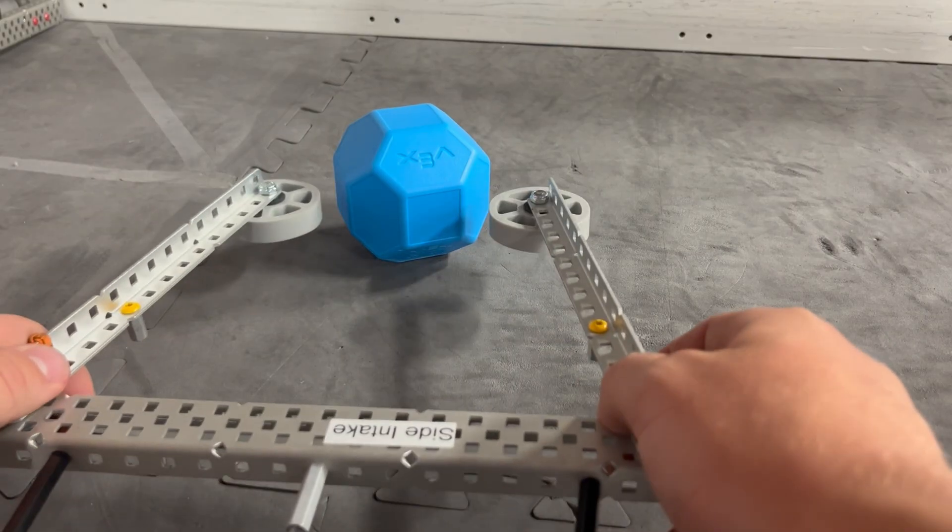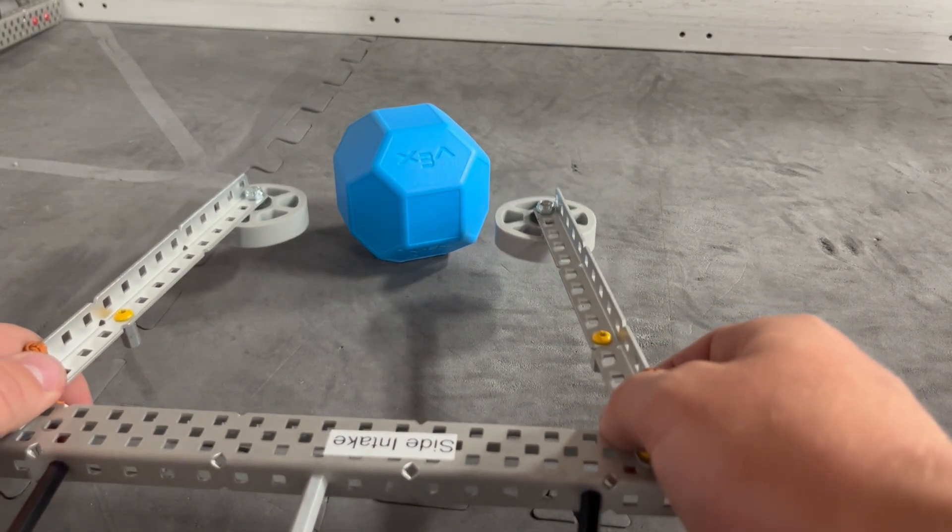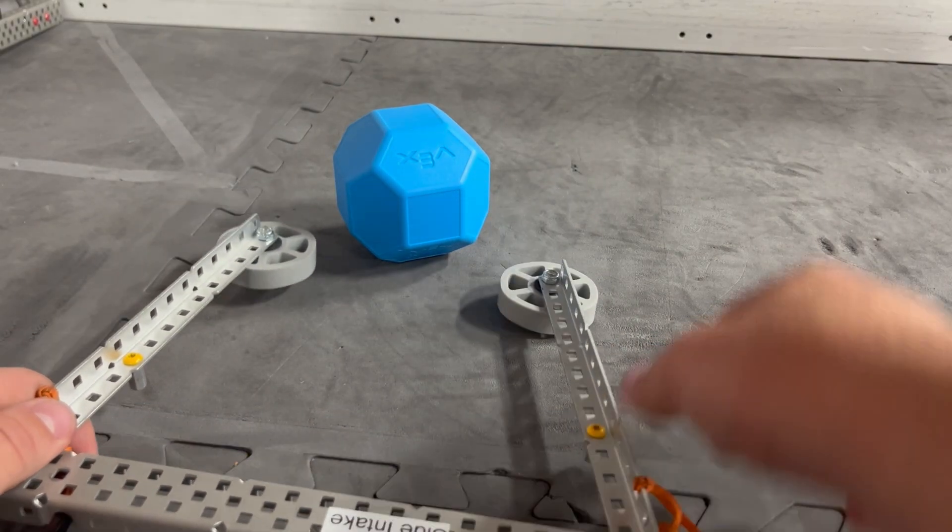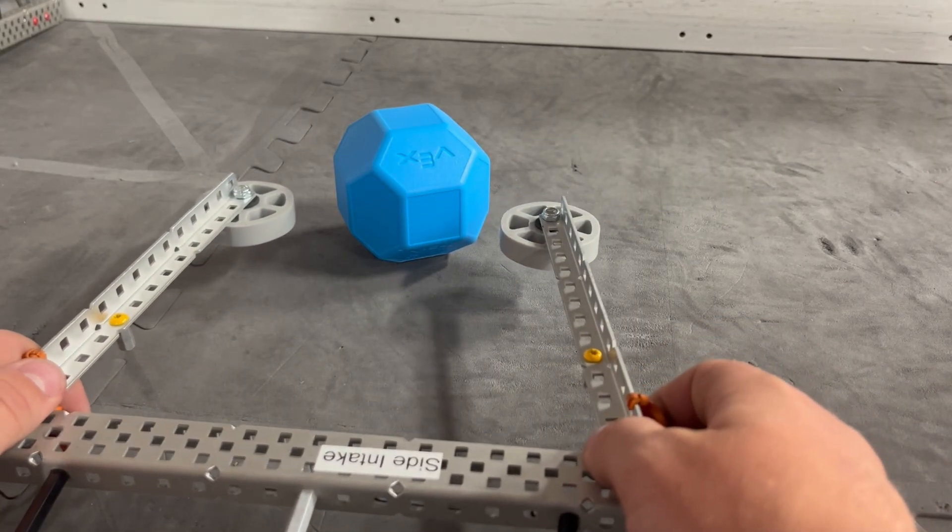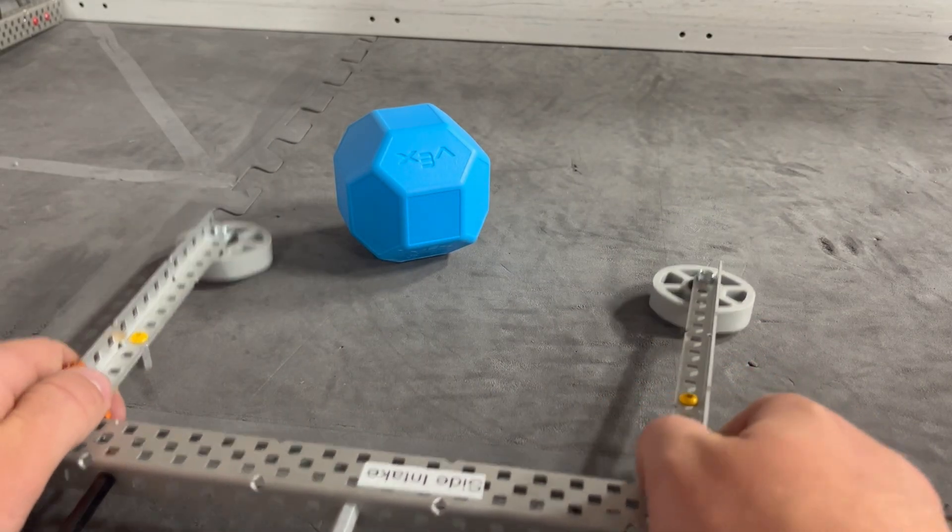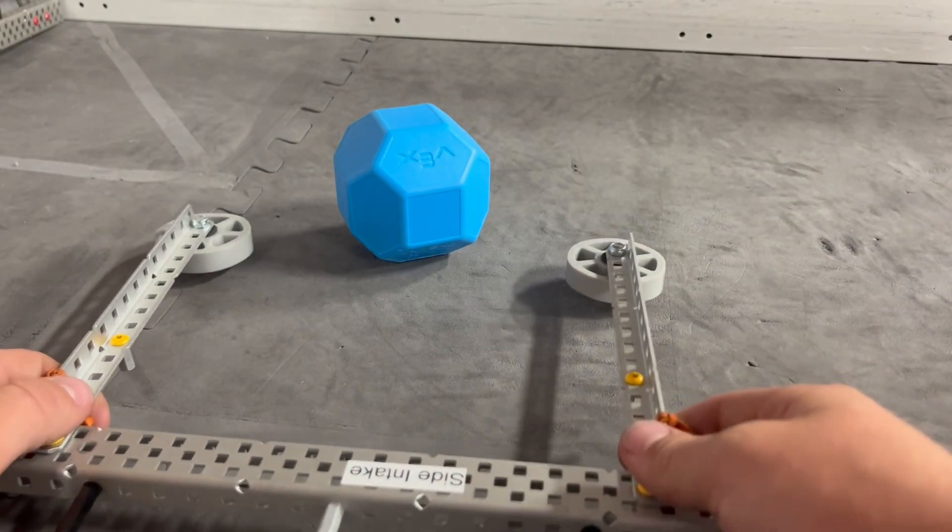The only downside is your intake is probably going to be pretty narrow. So having some sort of funnel is going to be useful there or having them wider and having a second stage pre-roller on the top of that.